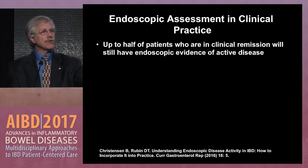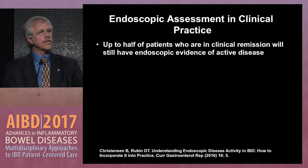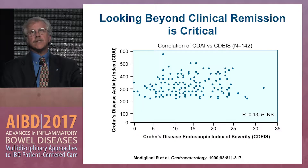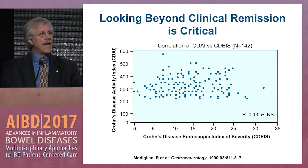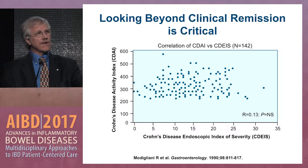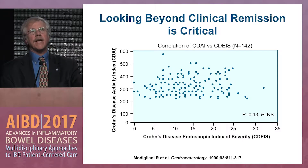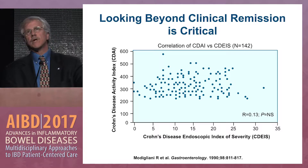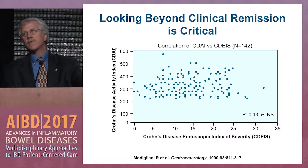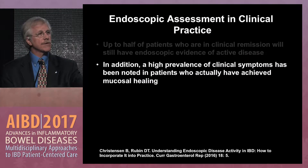How do we use endoscopy in our clinical practice? We know that up to half of patients who are in clinical remission will still have endoscopic evidence of active disease. The Crohn's disease activity index used in past clinical trials shows no correlation with the Crohn's disease endoscopic index of severity. A classic example is a 25-year-old woman with 8 to 10 bowel movements a day and severe abdominal pain — CDAI score of 350 — but the kicker was this patient has IBS. We really cannot use clinical symptoms alone when making management decisions for patients with ulcerative colitis and in particular Crohn's disease.